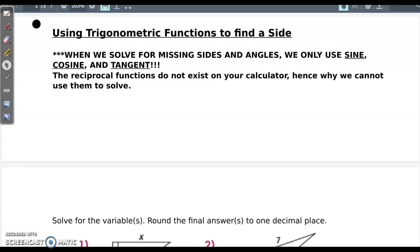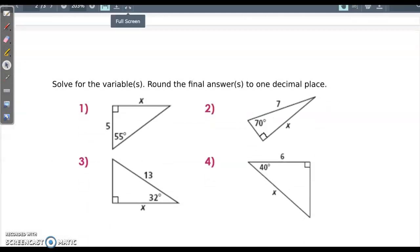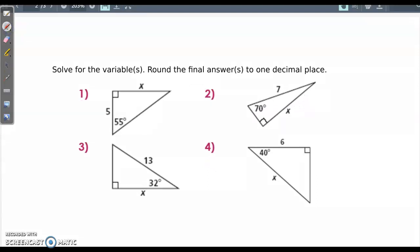This video is on using these trig functions to find missing side lengths and also to find a missing angle. We're only going to use sine, cosine, and tangent when finding missing sides or angles. So the three trig functions we can use are sine, cosine, and tangent. I'm going to write SOH CAH TOA here because it will help us determine which trig function to use in a specific problem.